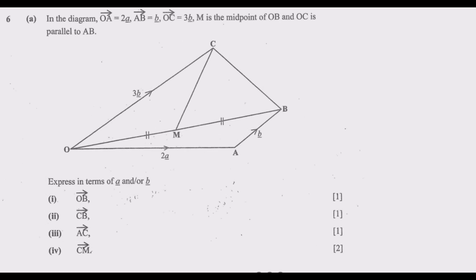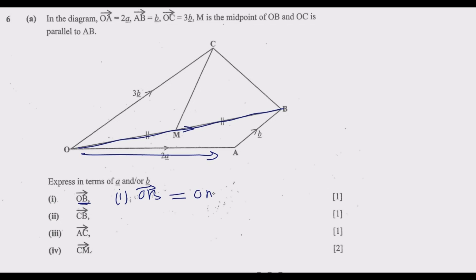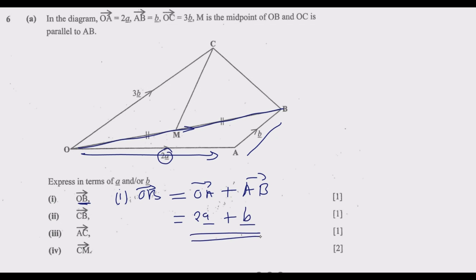Starting with question part A. The first thing we need to find is OB. How do you move from O to B? There are two options: move from O to C then to B, or O to A then to B. Since we've been given OA and AB, it's better to go via OA then AB. So OB equals OA plus AB, which is 2 vector a plus vector b. That gives you the one mark.